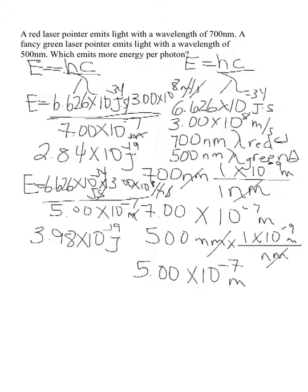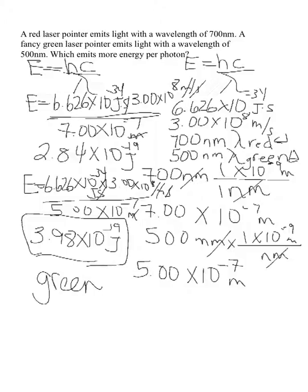So we have two energies: 2.84 times 10 to the negative 19 joules for red and 3.98 times 10 to the negative 19 joules for green. The larger is the green light, so green emits more energy per photon. This makes sense because green has a smaller wavelength, and since wavelength is in the denominator and hc is constant on top, a smaller denominator gives a larger result. You could have determined this just by comparing wavelengths, without doing any math. Thank you for listening.